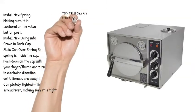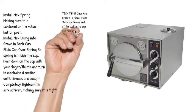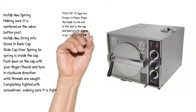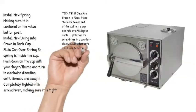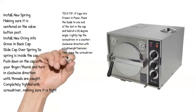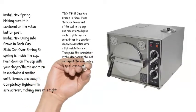Tech Tip: if caps are frozen in place, place the blade to one end of the slot in the cap and hold at a 45 degree angle. Lightly tap the screwdriver in a counterclockwise direction with a lightweight hammer. Then place the screwdriver at the other end of the slot and repeat. Try unscrewing it again. Once usually does it, but if it is still difficult just repeat as above.